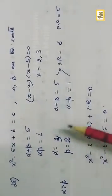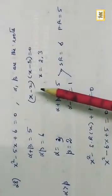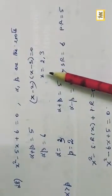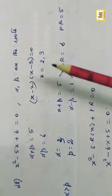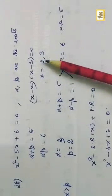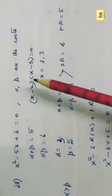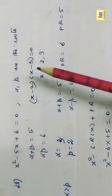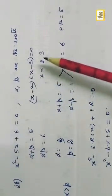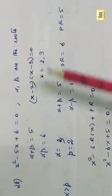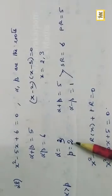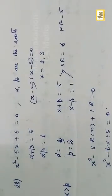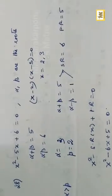Factorising the given equation gives (x-2)(x-3) = 0, so x = 2, 3. Since alpha > beta, alpha = 3 and beta = 2. We need to find an equation with roots alpha+beta and alpha-beta.